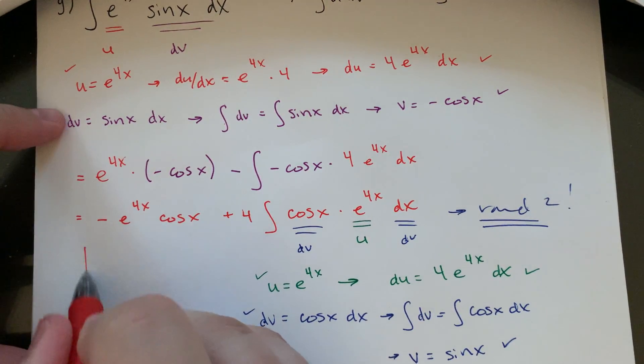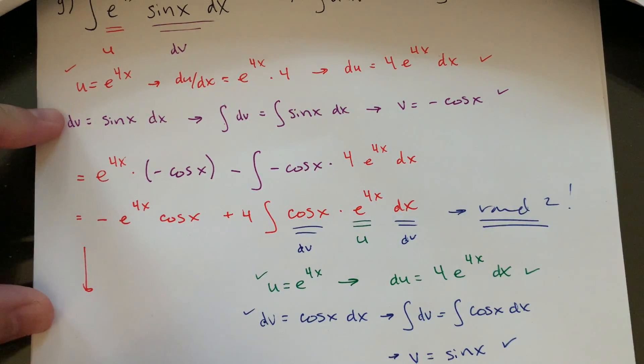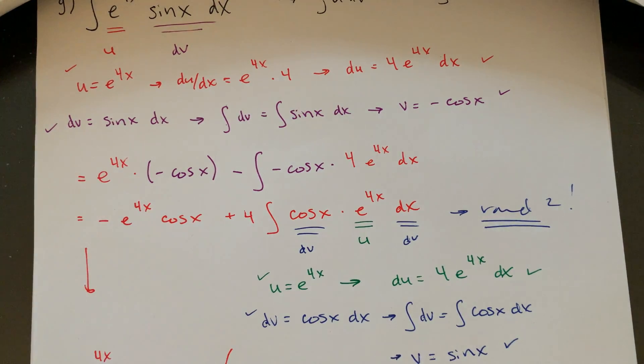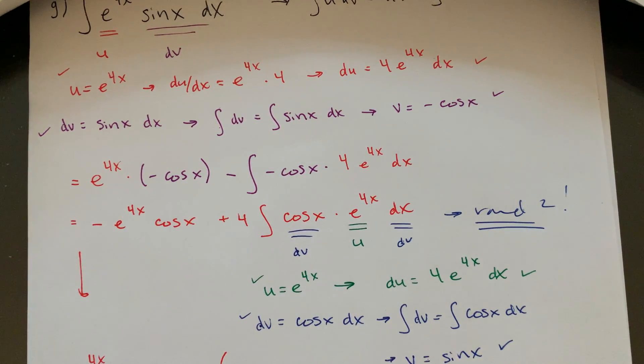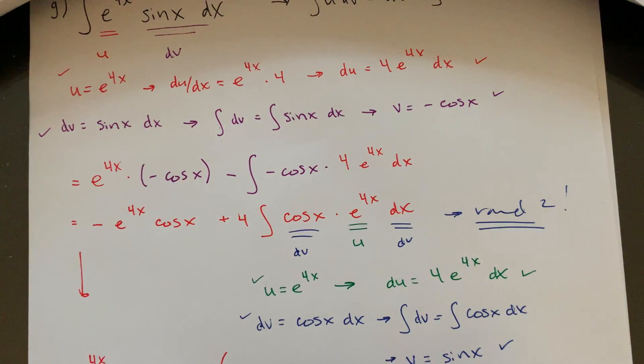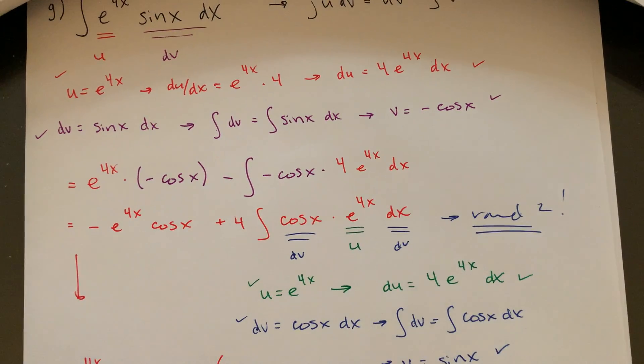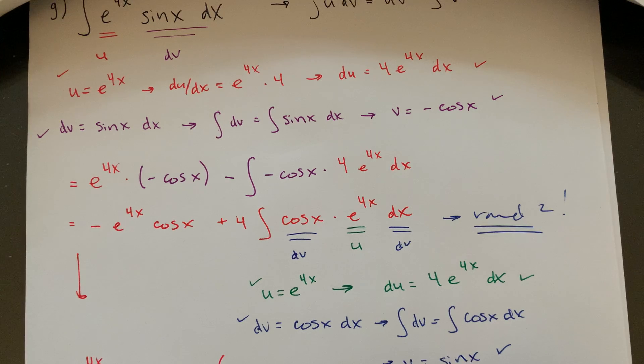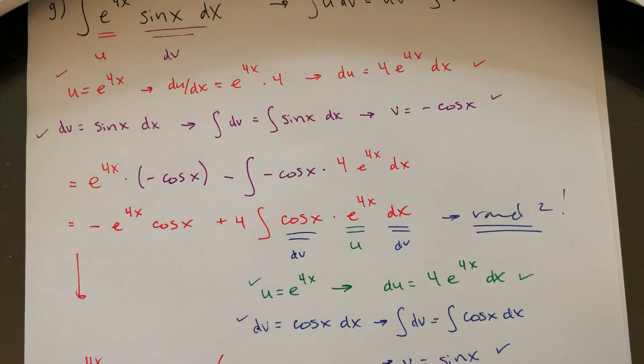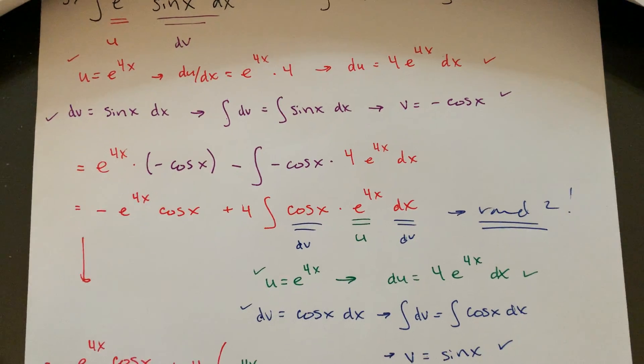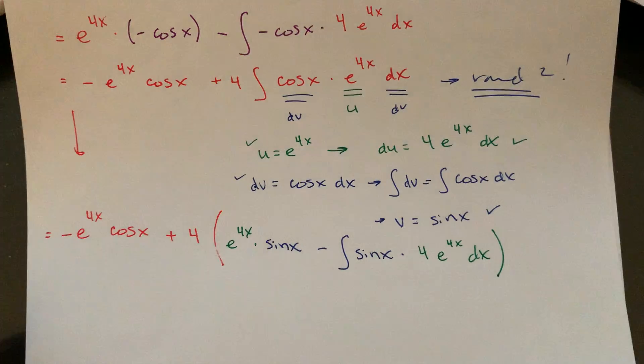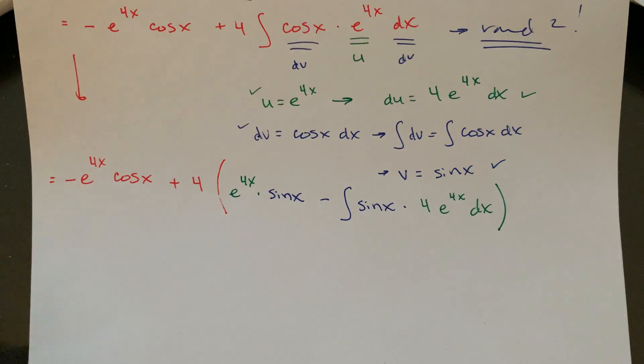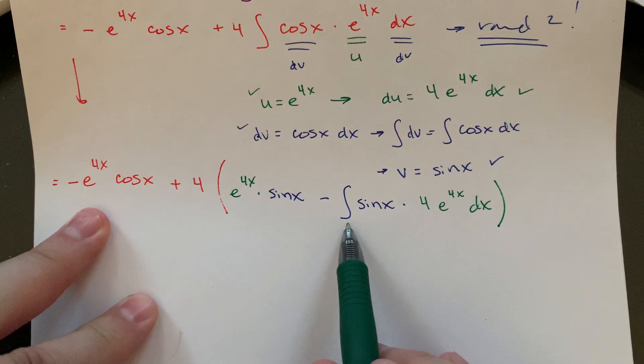All right, so carry this stuff down. So this will be negative e to the 4x cosine x plus 4 times, so then I'll lay everything out in here. So u is e to the 4x times my v, which is positive sine of x minus the integral of sine of x times my du, which was 4 e to the 4x dx.